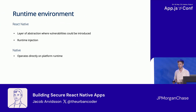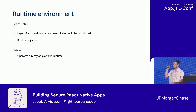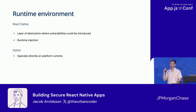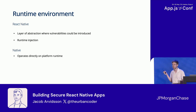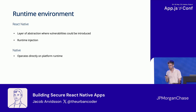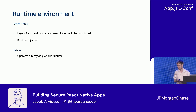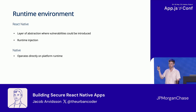When writing things in JavaScript, it runs on the JavaScript virtual machine, adding a layer of abstraction where additional vulnerabilities can be introduced. We're opening ourselves up to things like runtime injections. On native, you're operating directly on the native runtime, so you don't have those risks introduced by additional abstraction layers.